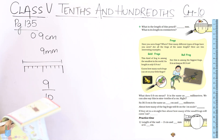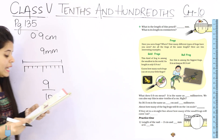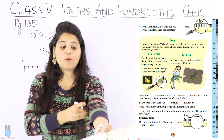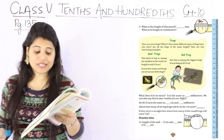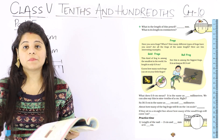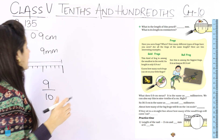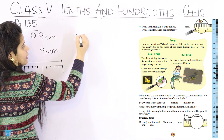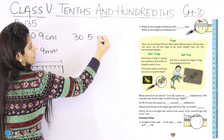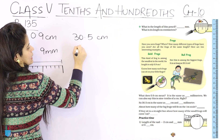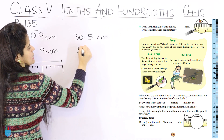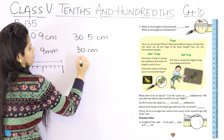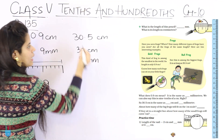Now let's talk about 30.5 centimeters. 30.5 centimeters is the same as 30 centimeters and 5 millimeters.